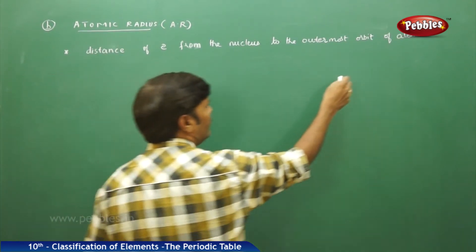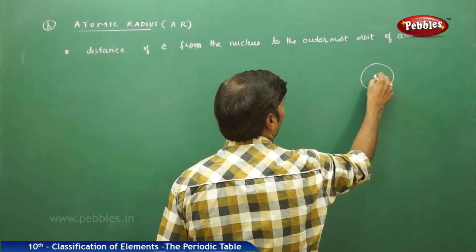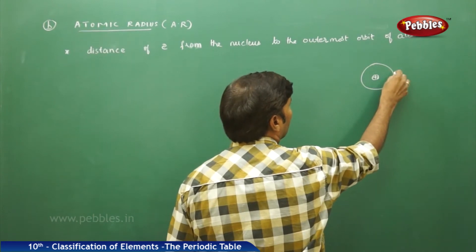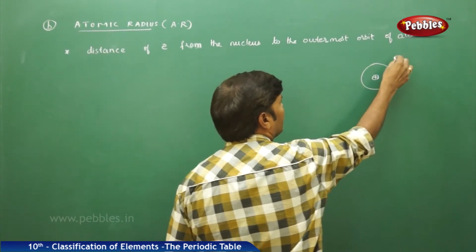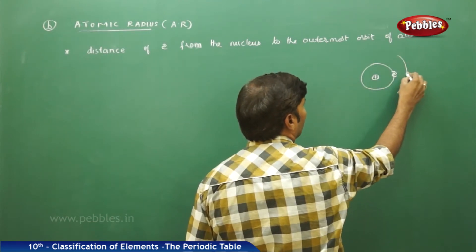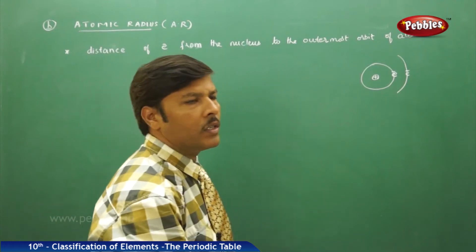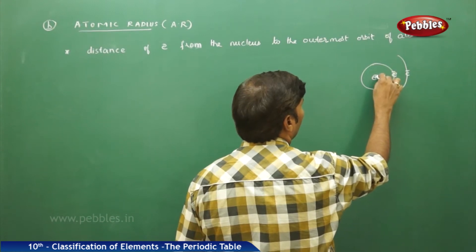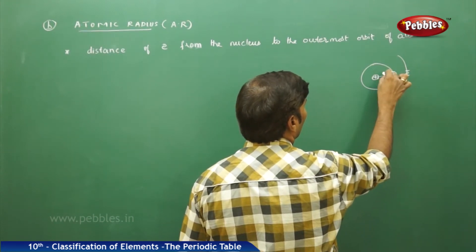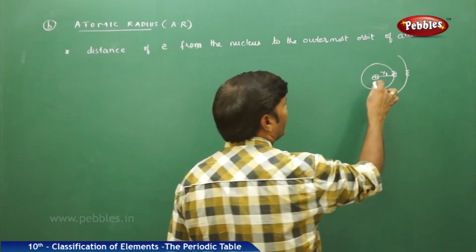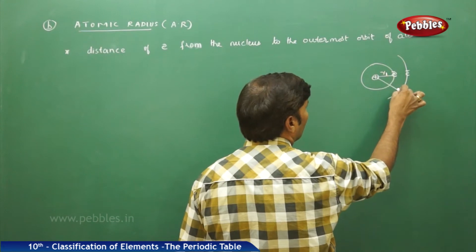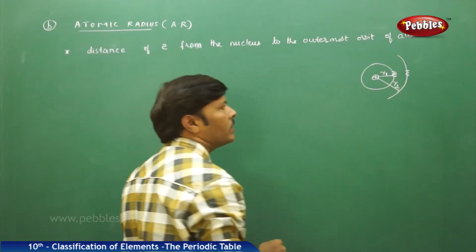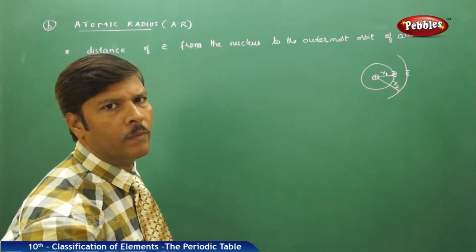For example, if you take an atom which has a positively charged nucleus, if this is the first orbit or first shell, imagine an electron is present there. If there is one more electron cloud in a second shell where the electron is present, then the distance from the nucleus to the outermost orbit gives the atomic radius. If you take the first shell, the radius is r1; if you take the second shell, the radius is r2. As the number of shells increases, the atomic radius also increases.